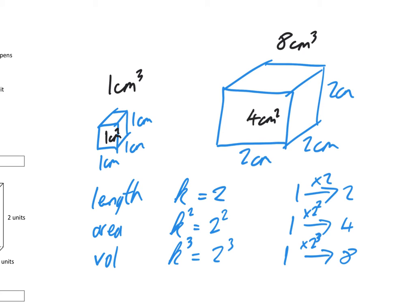To get from the small cube to the big cube lengthwise, you multiply by k which is 2. To get from the small cube to the big cube area-wise, you multiply by k squared, which is 2 squared, equal to 4. And for volume, to get from the volume of the small cube to the volume of the big cube, you multiply by k cubed, which is 2 cubed, equal to 8.